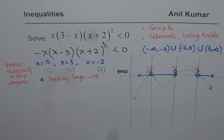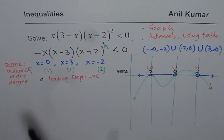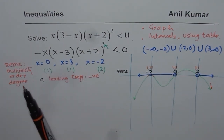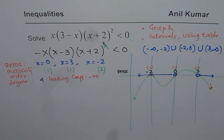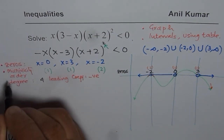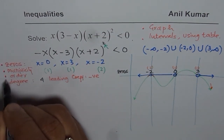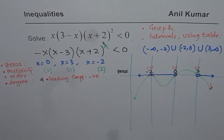To sketch a graph you need to know: zeros, their multiplicity or order, degree, and leading coefficient — these five things are required.